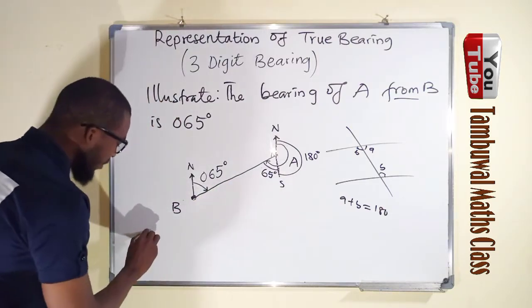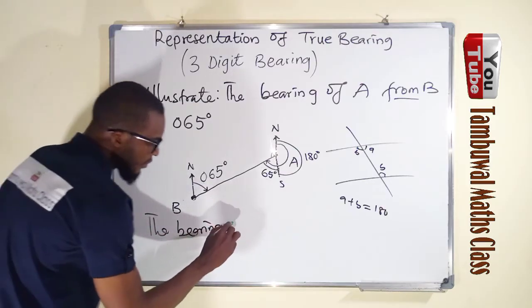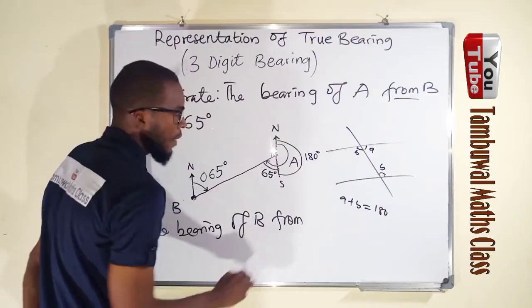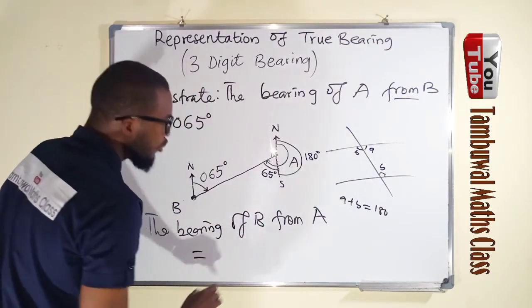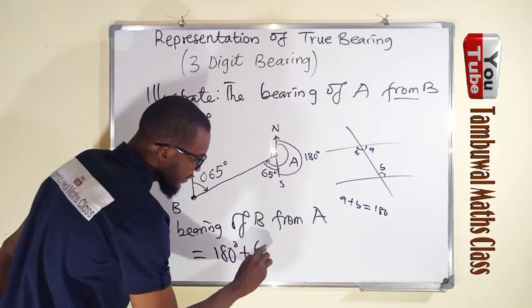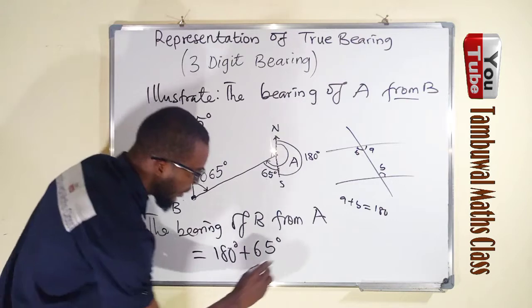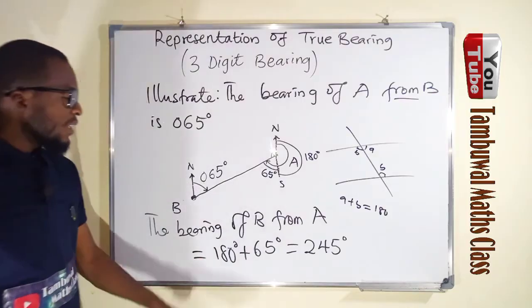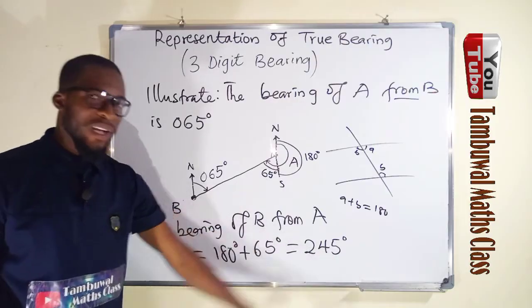So the bearing, you write it, the bearing of B from, this word is very important, from A. It means the angle is measured from A is equal to 180 degrees plus 65 degrees, which is equal to 245 degrees. It means that the bearing of B from A is equal to 245 degrees.